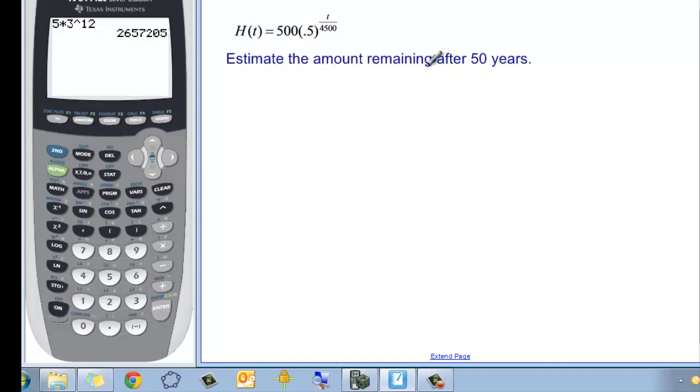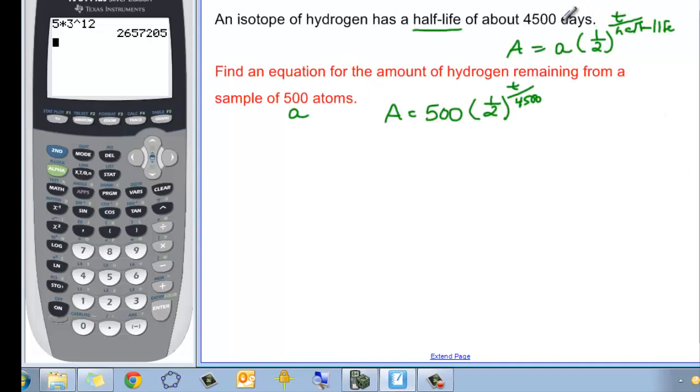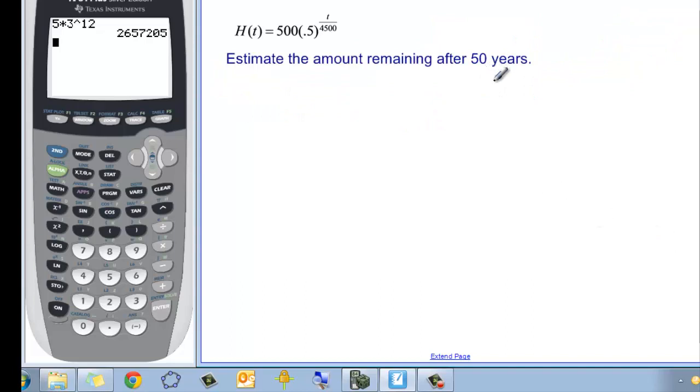So to estimate the amount remaining after 50 years. And if we go back and look at our problem, it said 4,500 days. So we have to figure out how many days there are in 50 years. Well, remember there are 365 days in one year. So we have 50 years, we multiply that by 365 days per year, and we're going to get 18,250.